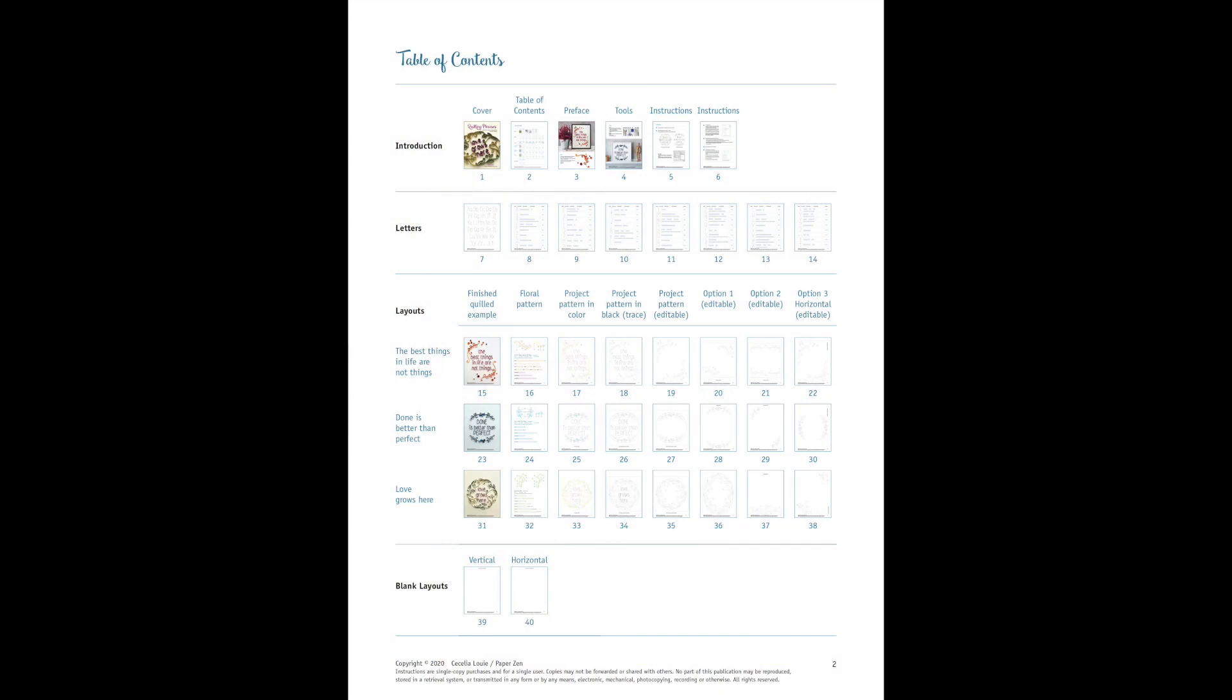Let me show you what's inside. This is the table of contents. It contains a thumbnail view of all the pages in your PDF book to help you visually find what you're looking for quickly. Under every page is the page number.